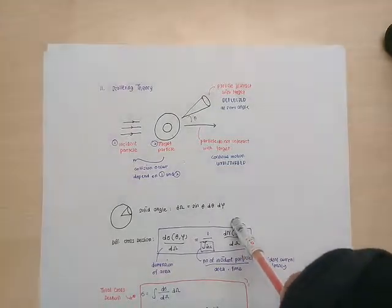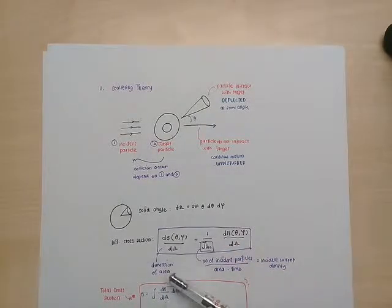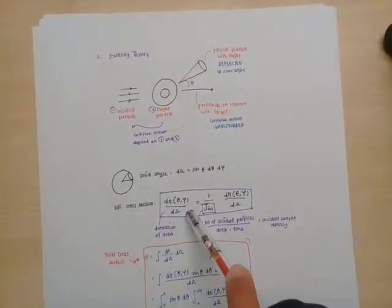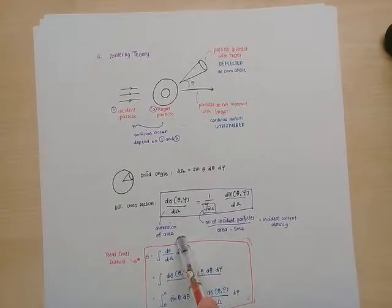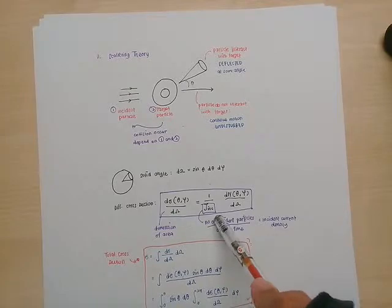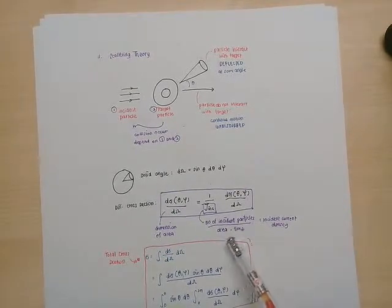This term has the dimensions of area, and J incident is the number of incident particles per area per time, which is also called the incident current density.